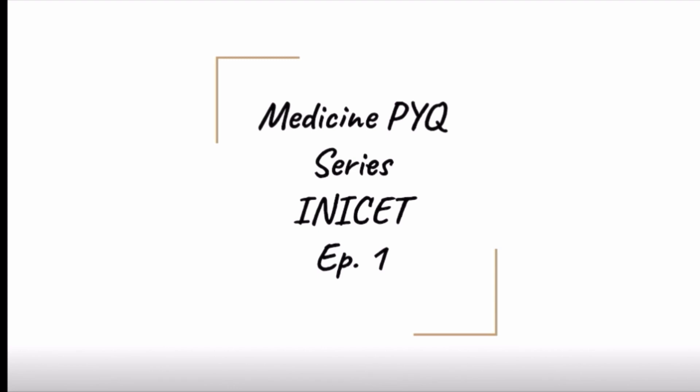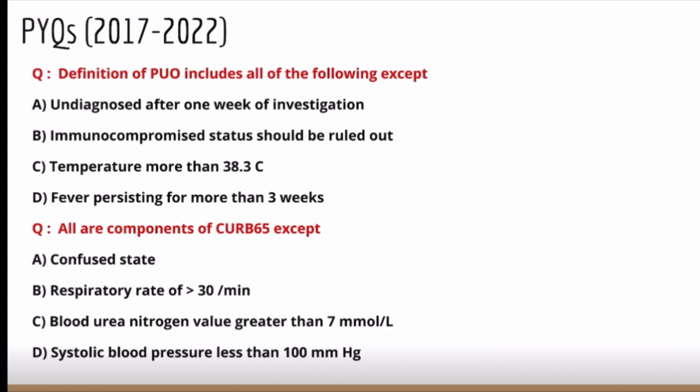So let's get started. The first question: definition of PUO includes all of the following except. Options are: undiagnosed after one week of investigation; immunocompromised status should be ruled out; temperature more than 38.3 degrees Celsius; and fever persisting for more than three weeks.